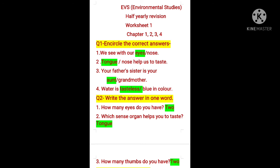Now question 2: write the answer in one word. First, how many eyes do you have? We all have two eyes — answer is two. Which sense organ helps you to taste? Tongue — only the tongue helps us to taste things, and we also speak with our tongue. How many thumbs do you have? We all have two thumbs — answer is two.